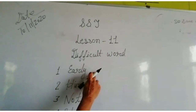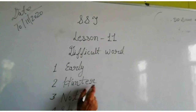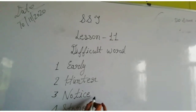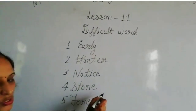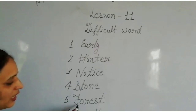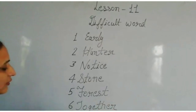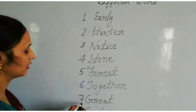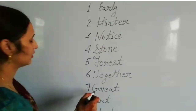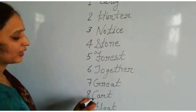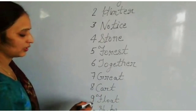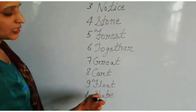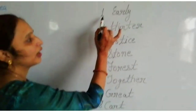Difficult words from Lesson 11: 1. Early — E-A-R-L-Y. 2. Hunter — H-U-N-T-E-R. 3. Notice — N-O-T-I-C-E. 4. Stone — S-T-O-N-E. 5. Forest — F-O-R-E-S-T. 6. Together — T-O-G-E-T-H-E-R. 7. Great — G-R-E-A-T. 8. Cart — C-A-R-T. 9. Float — F-L-O-A-T. 10. Shape — S-H-A-P-E.